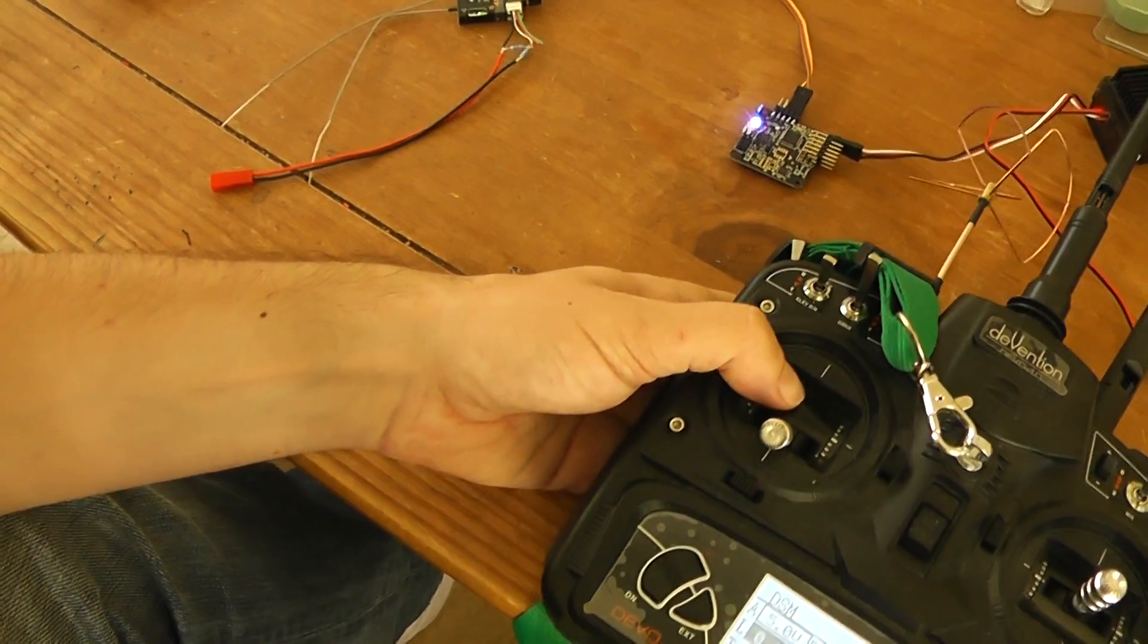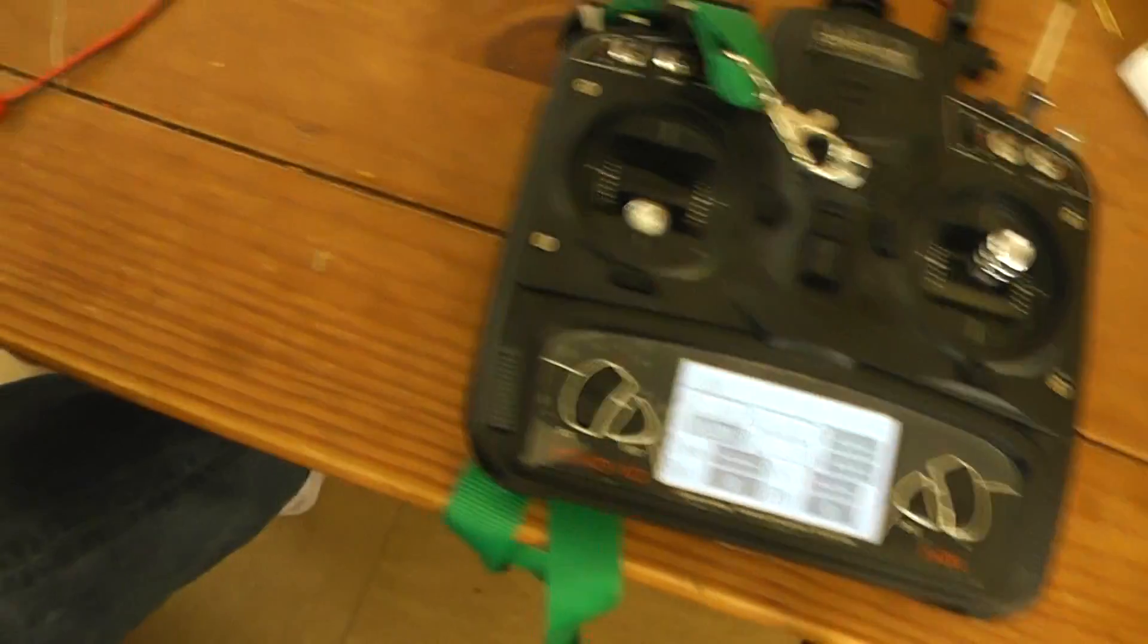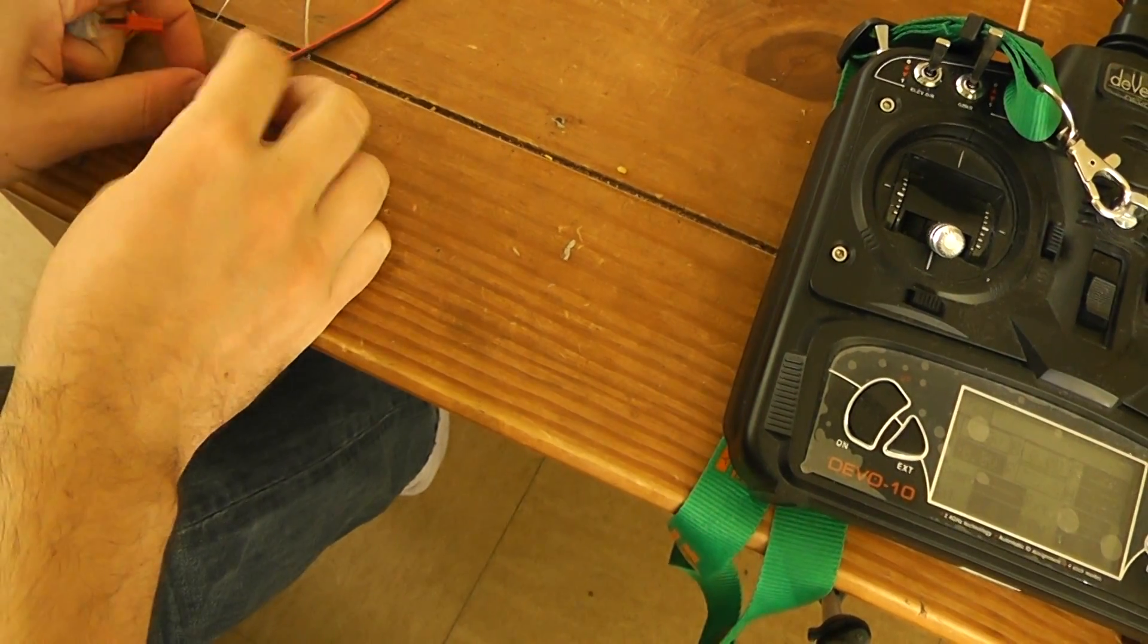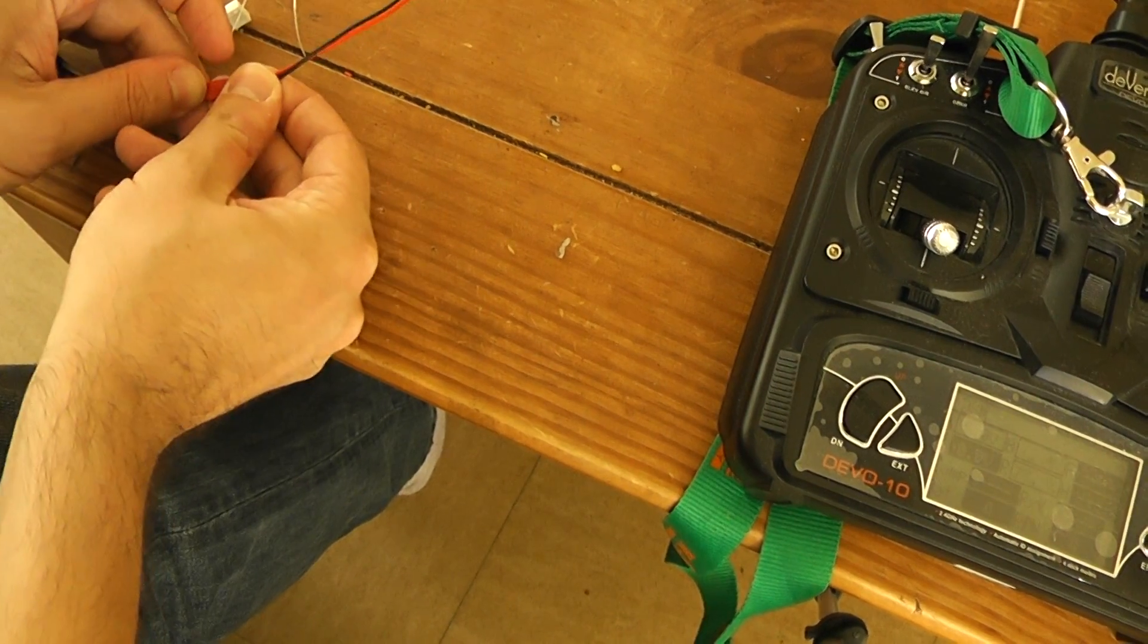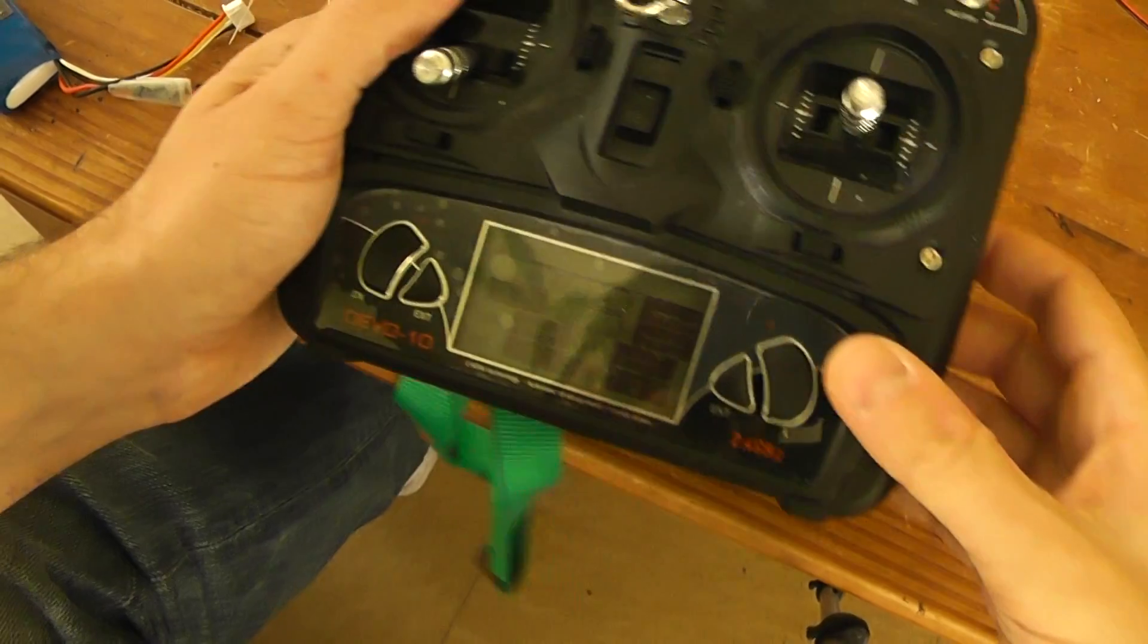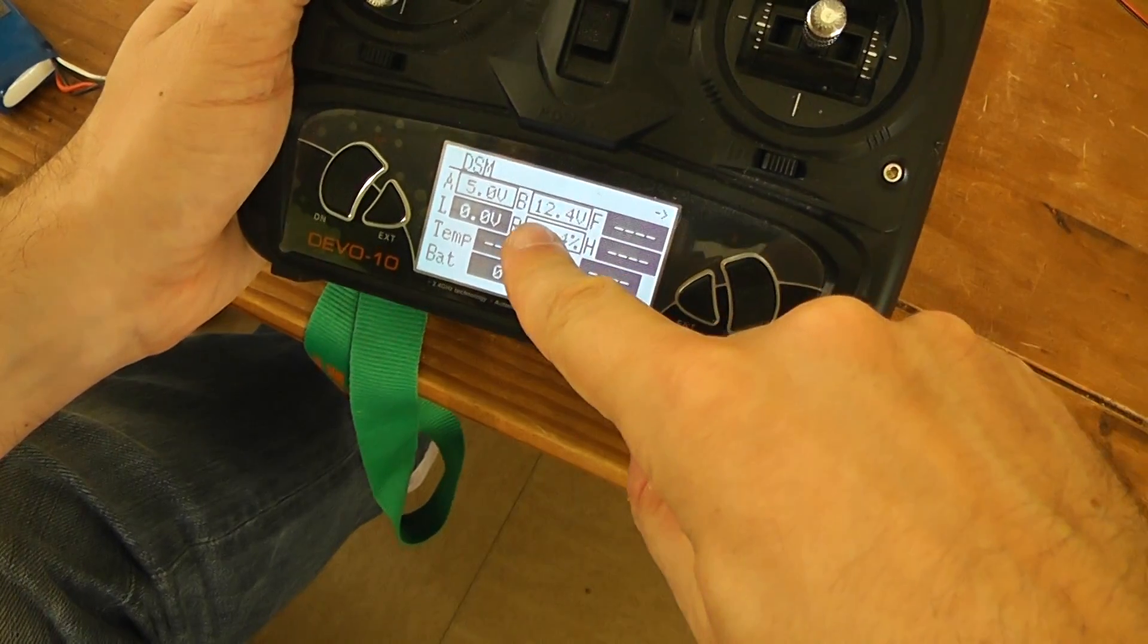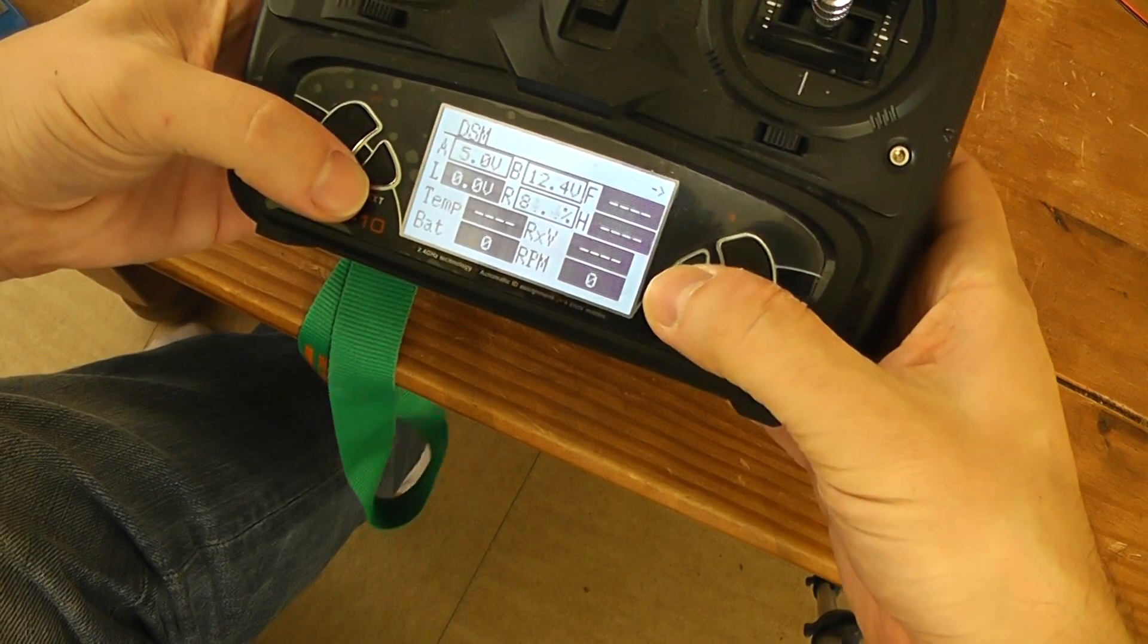Now I will plug a LiPo battery in the input, simulating for example your battery voltage of your quadcopter. You will see that now I can monitor the battery voltage of the quadcopter.